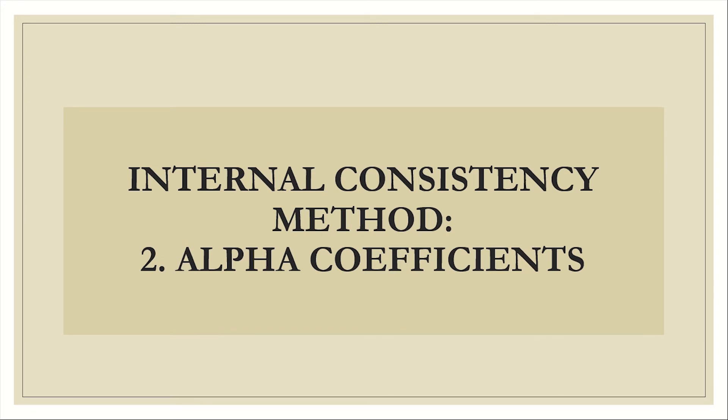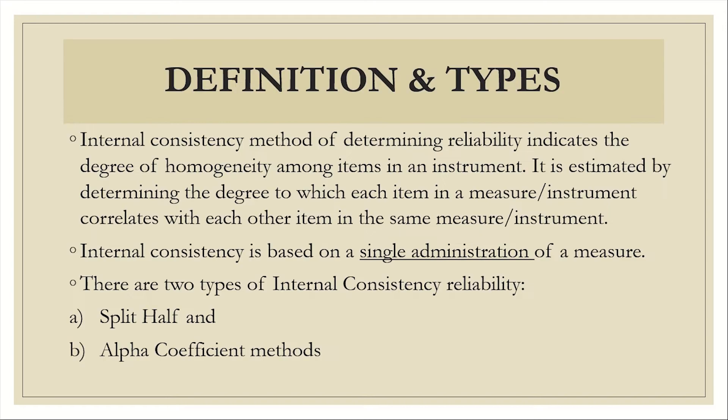Now we look at the second method under internal consistency. Do you still remember how we defined internal consistency? We said that internal consistency deals with the degree of homogeneity among items in an instrument, and it is based on a single administration of a measure. We also said that we have two types of internal consistency reliability methods: split-half and alpha coefficients.